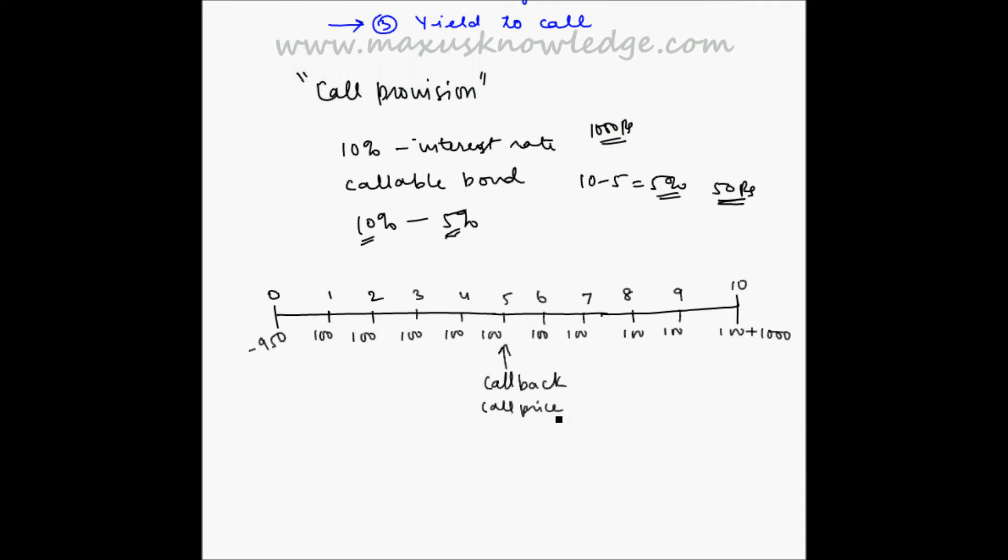which is the price that the call issuer will pay to the investor. This is similar to the maturity value. Let's say this has been fixed at 1050 rupees. Now we have to find out what is the yield till the point when the bond is going to be called back.